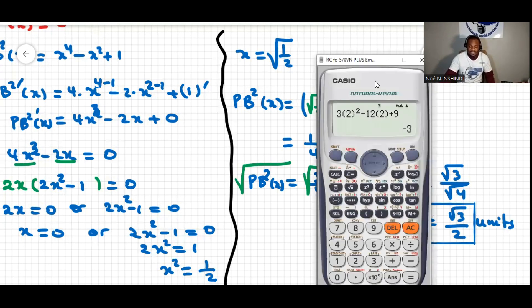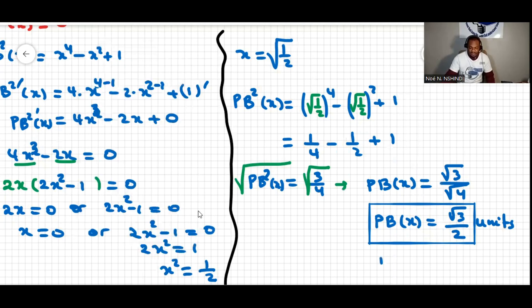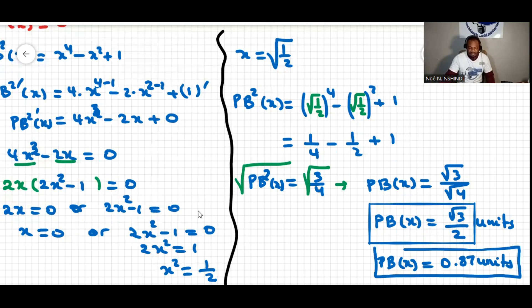We can check this on the calculator: √3 / 2 ≈ 0.87. So PB(x) = 0.87 units.